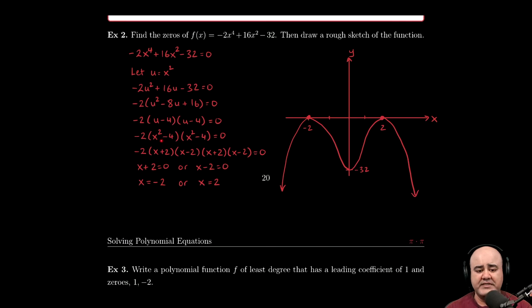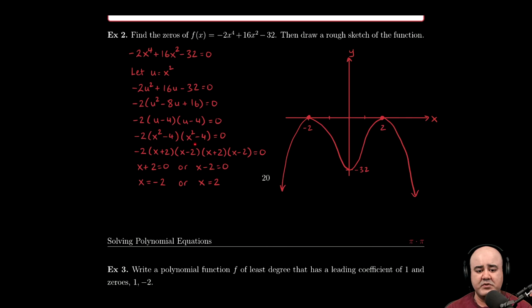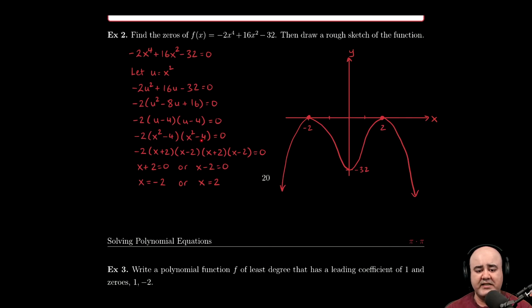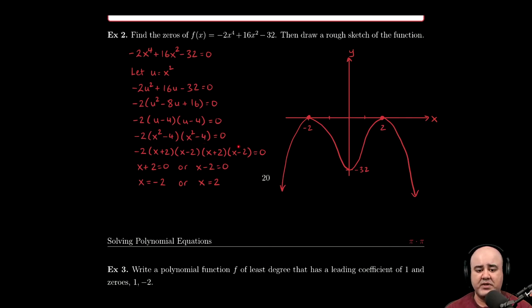This can be factored further. This is a difference of squares. So this factors to x plus two times x minus two. This is the same exact thing. So it also factors to x plus two times x minus two.